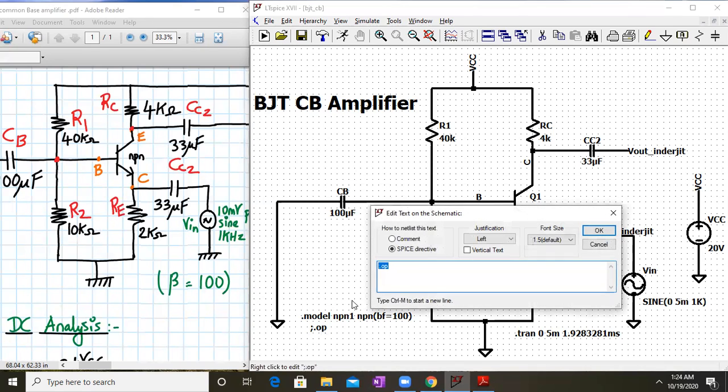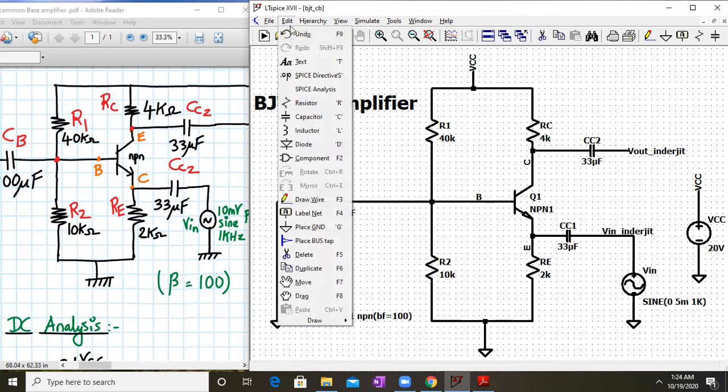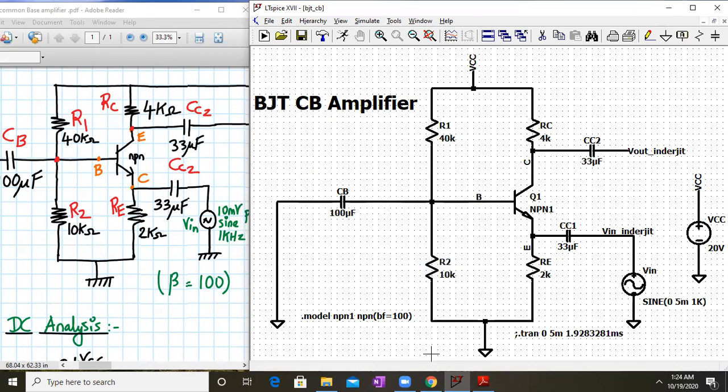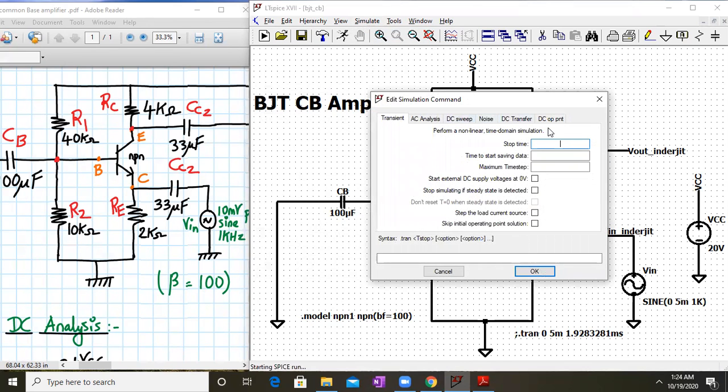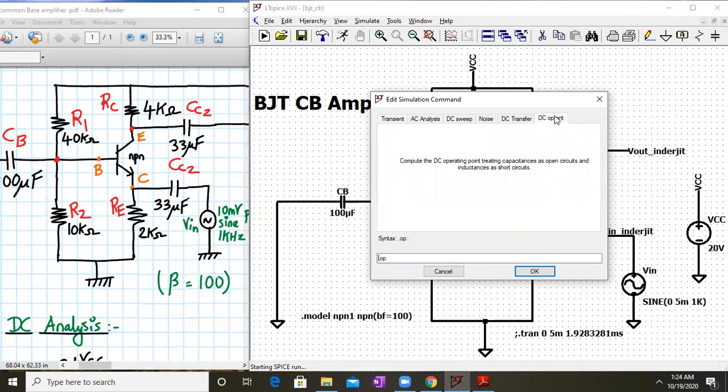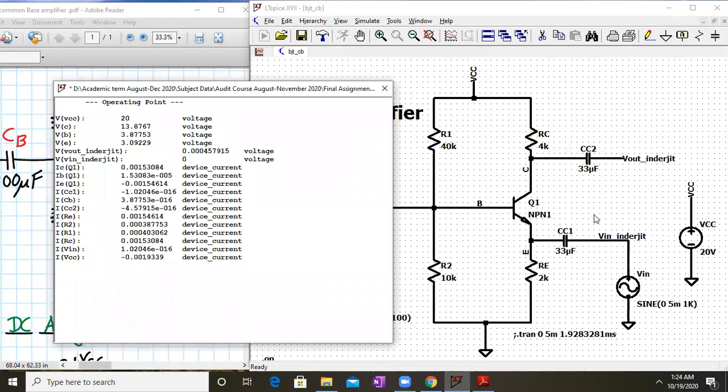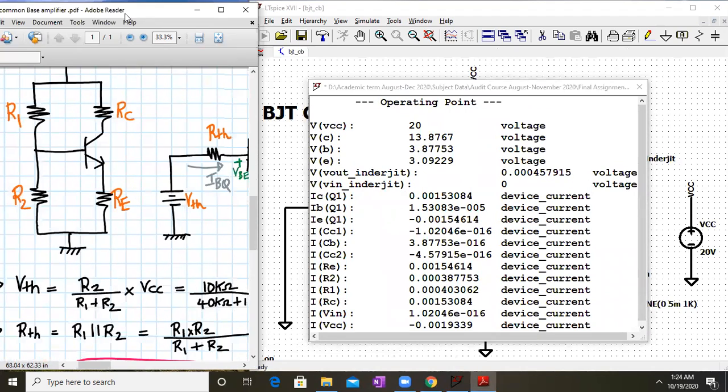Now, it's always a good idea to check the DC conditions first. So now if I go to simulate and click on run, it will ask me the simulation profile. Always it's a good practice to check the DC conditions first. So I'll select DC operating point and click on okay. Remember we have labeled everything: V in, V out, capital B capital C capital E. This is very helpful for labeling so that we can directly get these voltages from here.